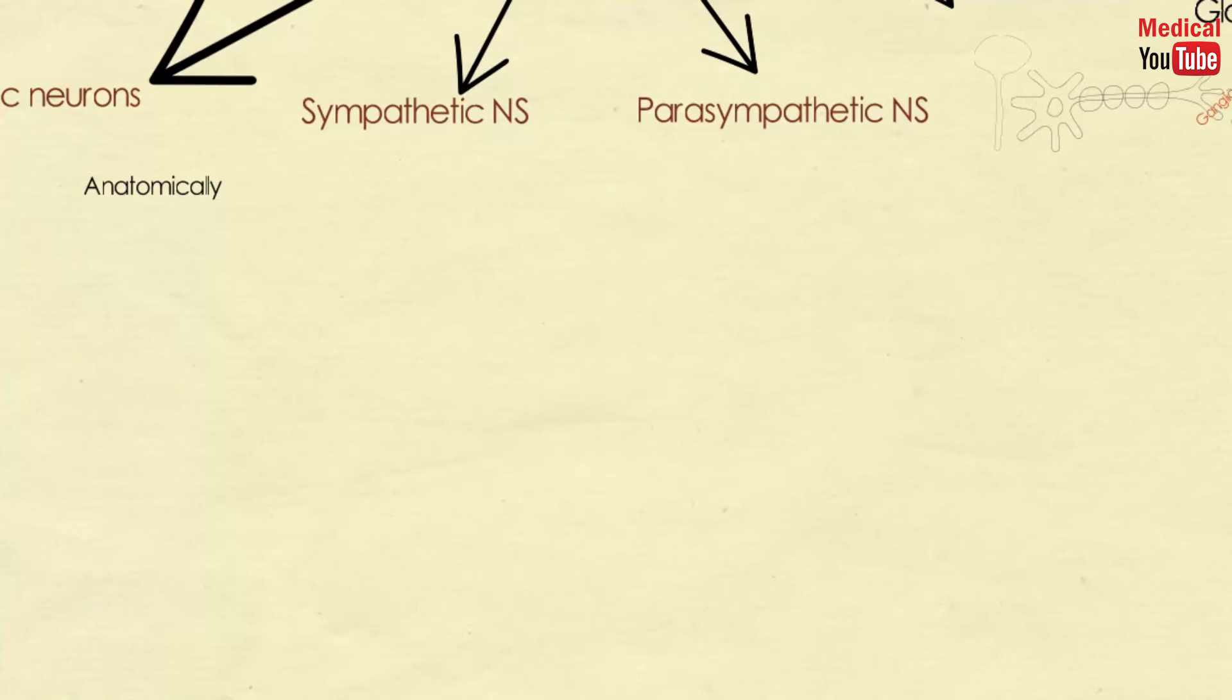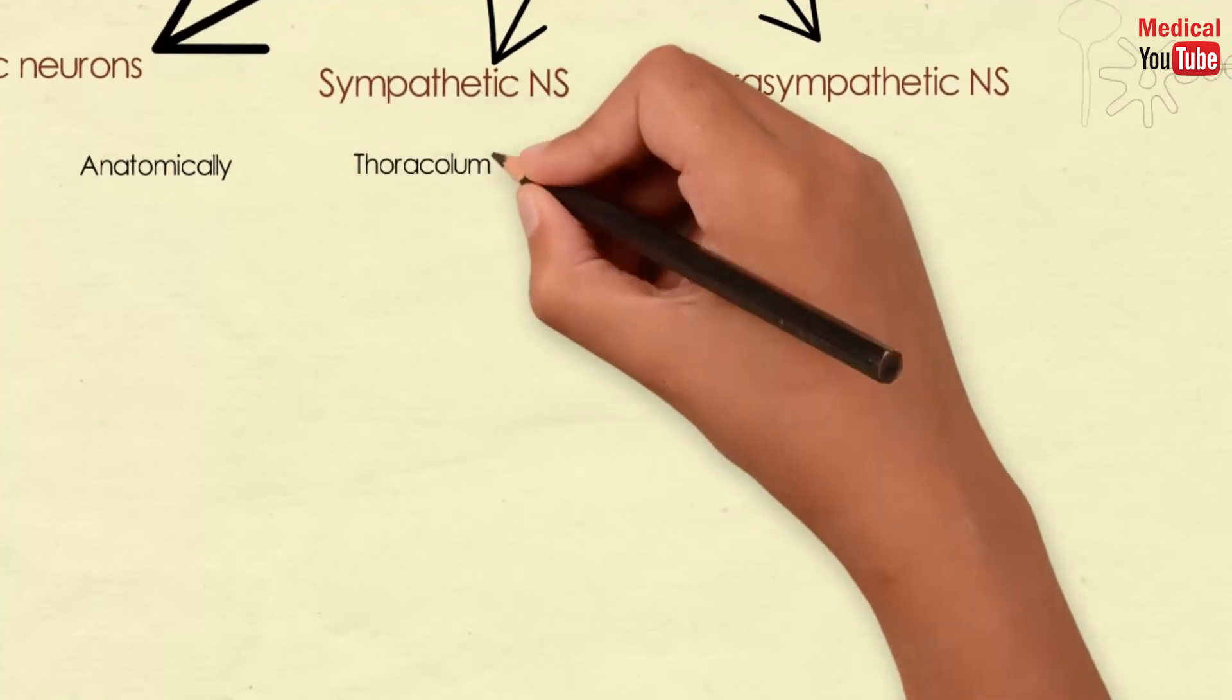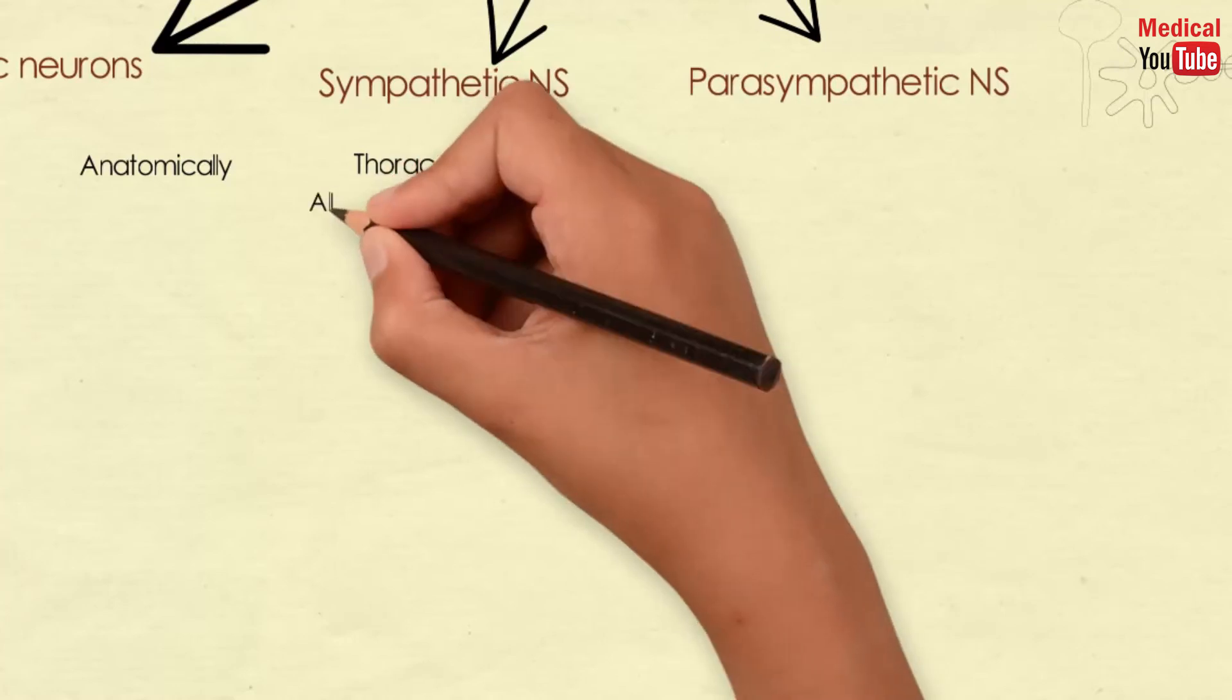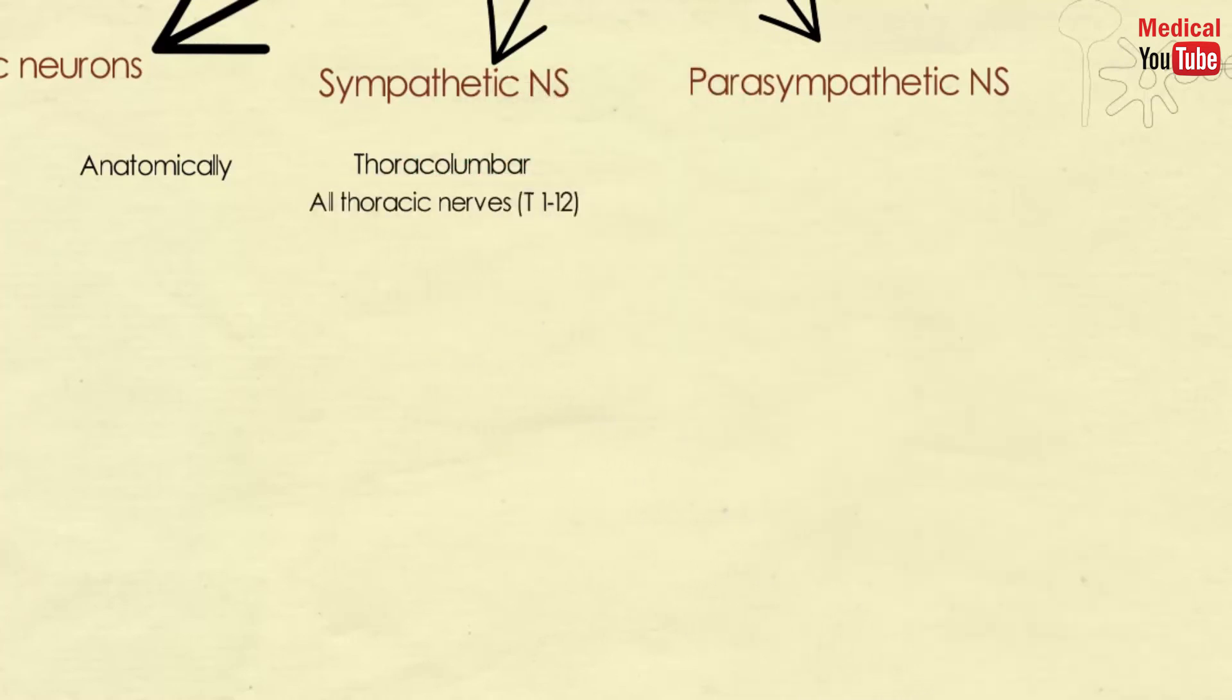Anatomically, the sympathetic and the parasympathetic neurons originate in the CNS and emerge from two different spinal cord regions. The preganglionic neurons of the sympathetic system come from the thoracic and lumbar regions.